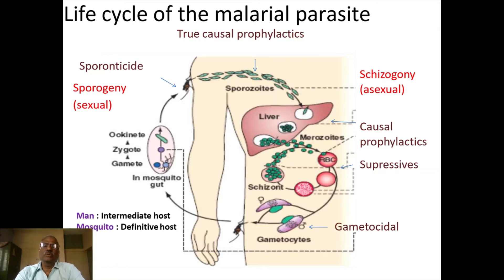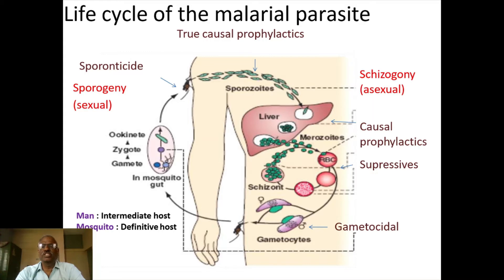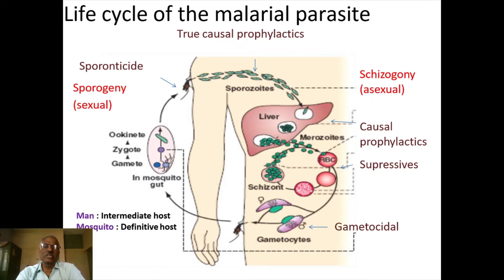This is the pre-erythrocytic stage, which is the asymptomatic stage of malaria. When RBCs are affected by other organs, this is called the exo-erythrocytic stage. The classification includes: pre-erythrocytic stage, erythrocytic stage, and exo-erythrocytic stage.